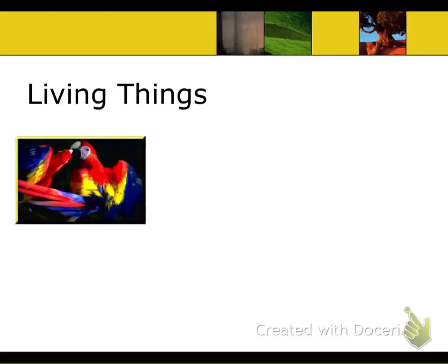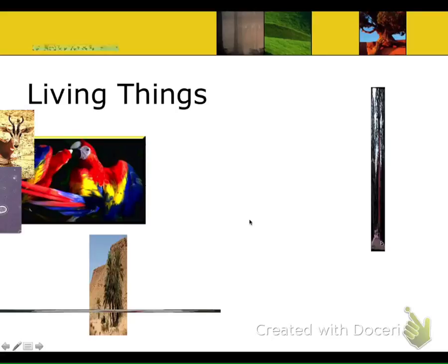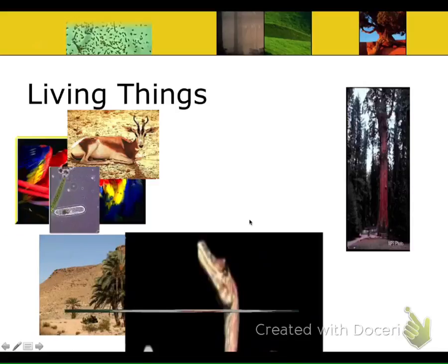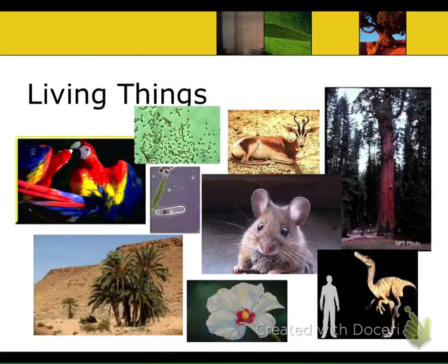There is a great diversity of life on this planet. The earth is pretty remarkable—it's the only place we absolutely know for sure life exists. When you look at our planet, we can see all sorts of living things: parrots and gazelles, trees and flowers.